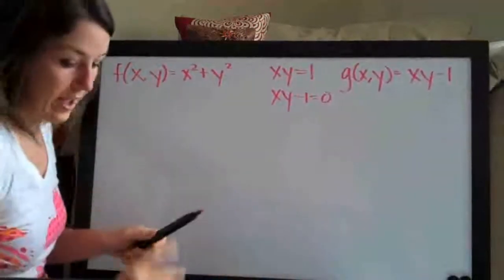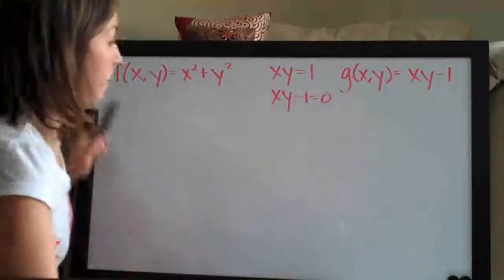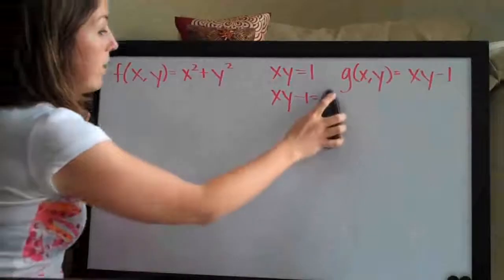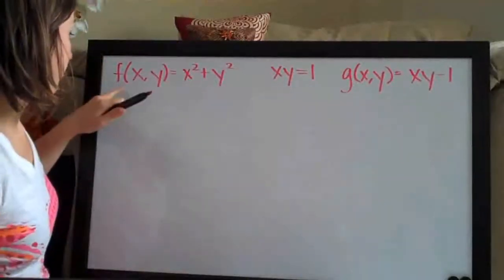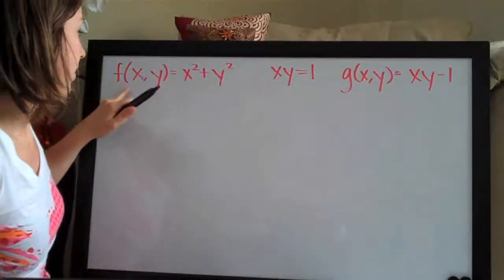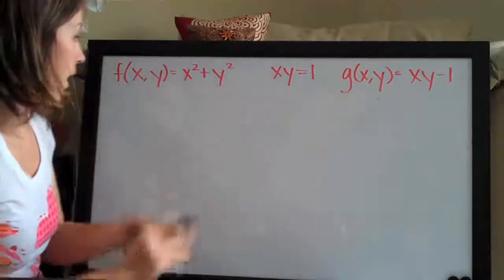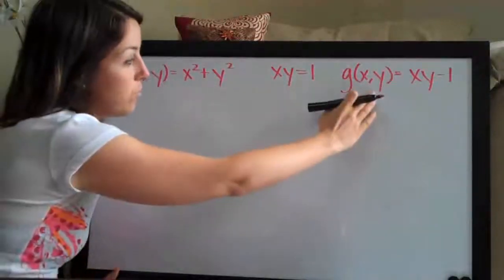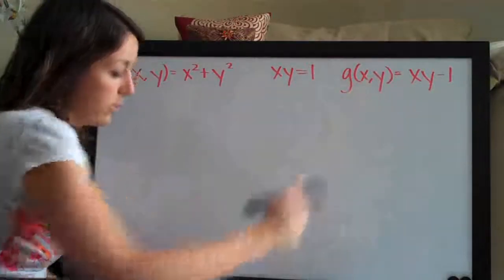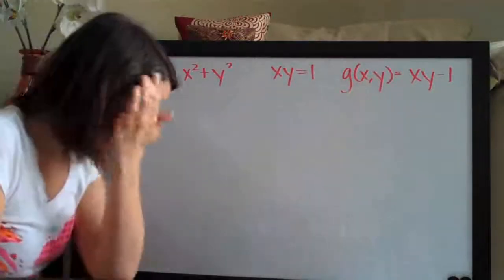So now we have two equations or two functions: f of xy and g of xy. f is the original function and g is the constraint equation.